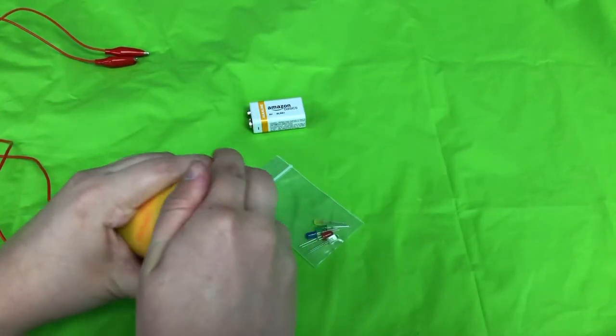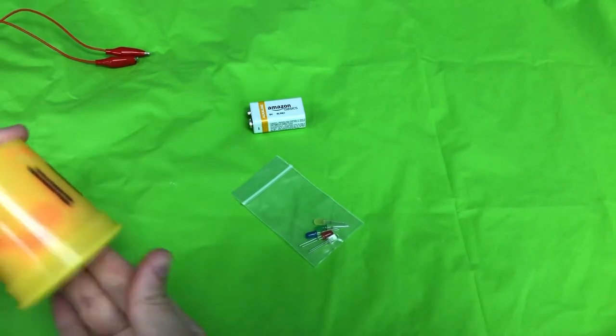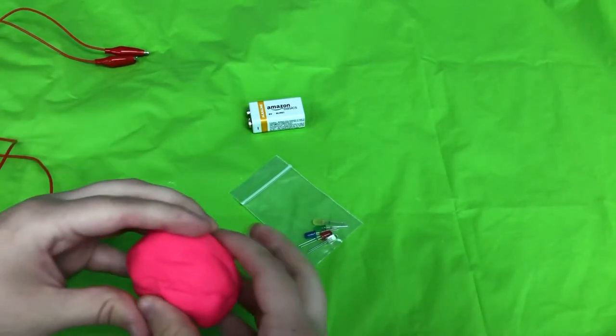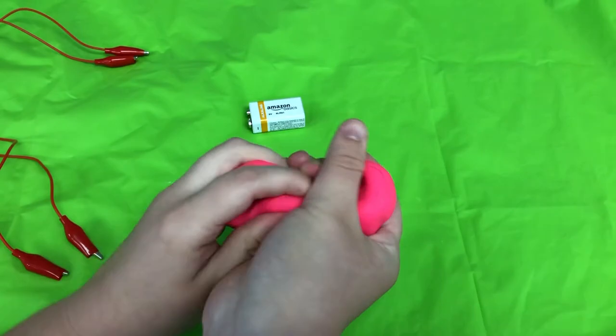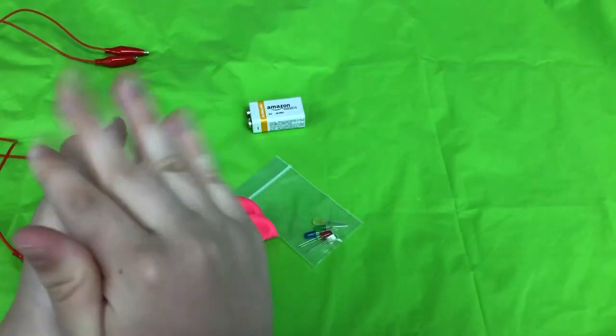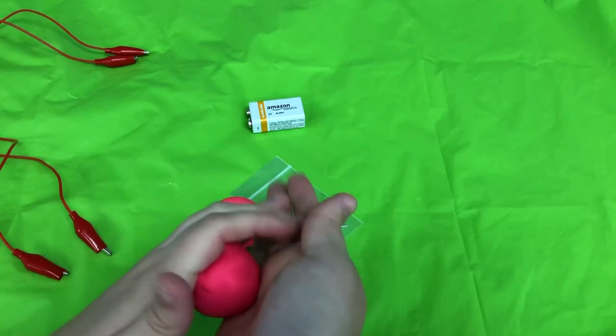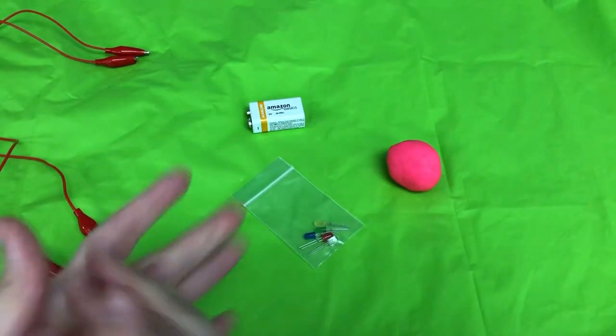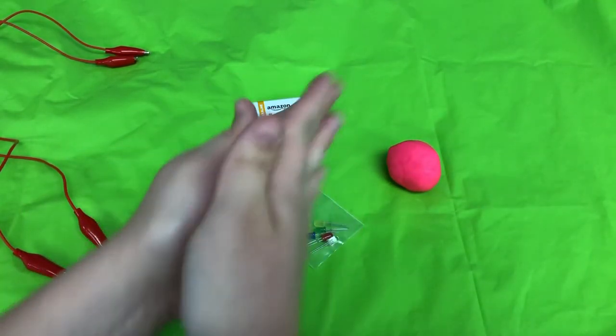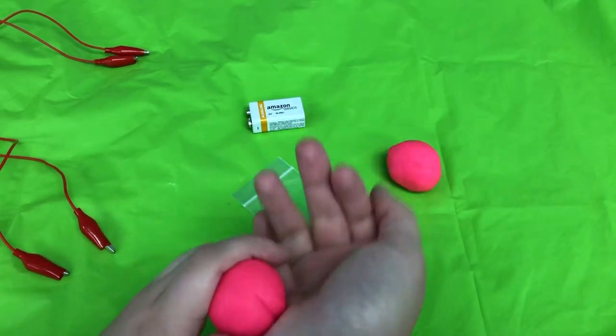First you're going to want to start off by taking out your Play-Doh, splitting it in half, and making two balls out of them. There I have one and two. Perfect.